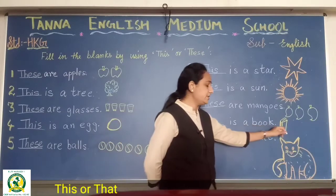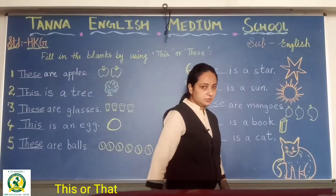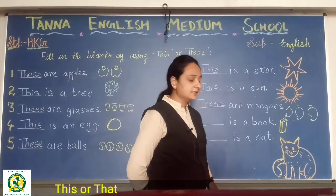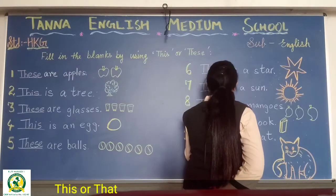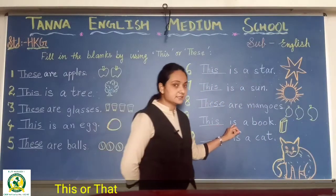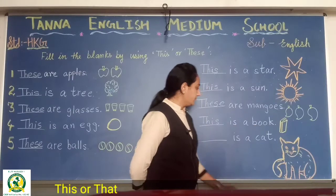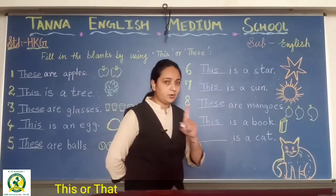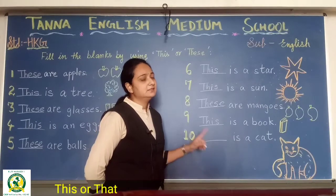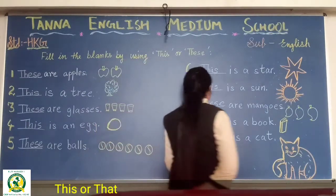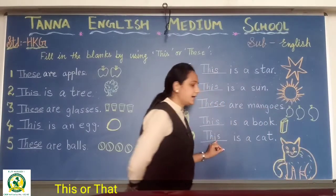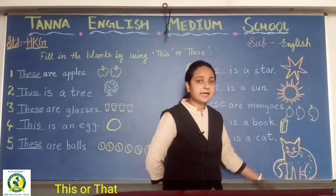Now book — how many books? Only one book. So 'this' or 'these'? Only 'this.' T-H-I-S. This is a book. And last is a cat — only one cat you can see. So what will you write here? 'This.' T-H-I-S. This is a cat.